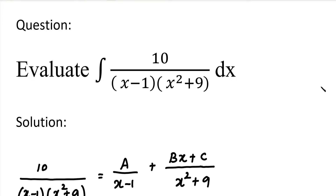Hi students. How do we evaluate a rational function as an integral? A rational function is a p divided by q formula, where p and q are polynomials. The problem is that we have to do a direct integration, but the partial fraction method is used to split the rational function, making it easy to do the integration.